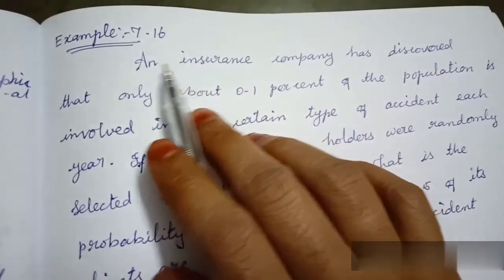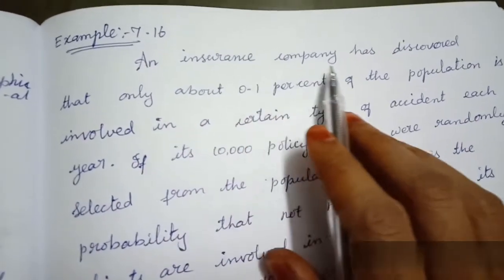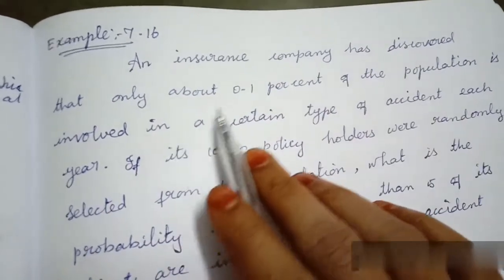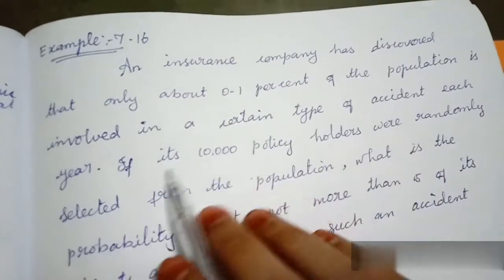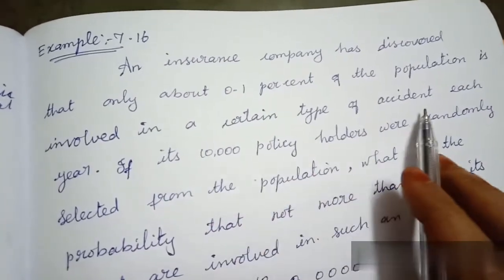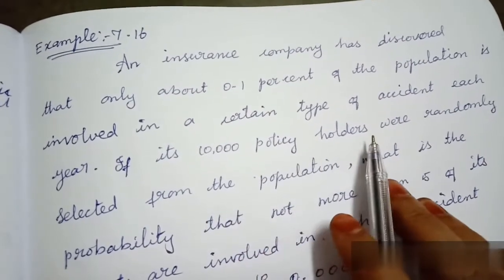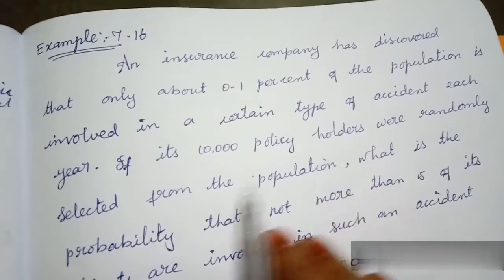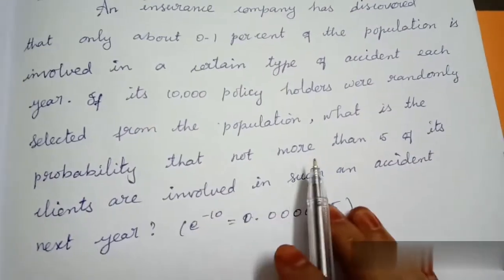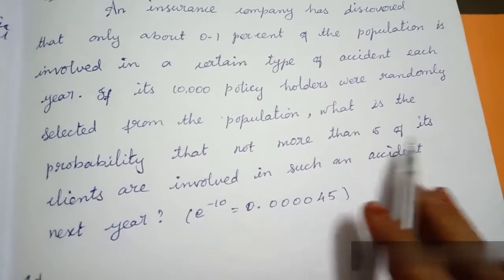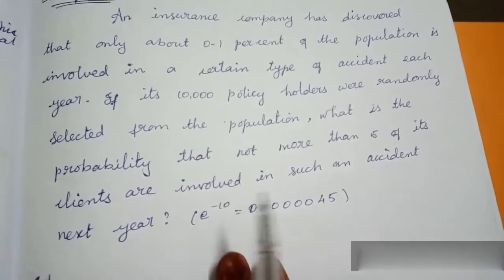Poisson Distribution, Example 7.16. An insurance company has discovered that only about 0.1% of the population is involved in a certain type of accident each year. If 10,000 policy holders were randomly selected from the population, what is the probability that not more than 5 of its clients are involved in such an accident next year?